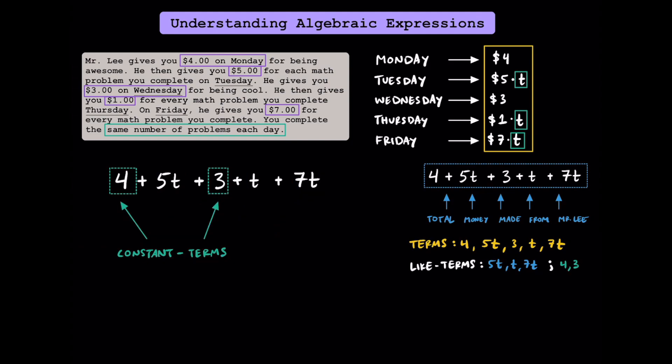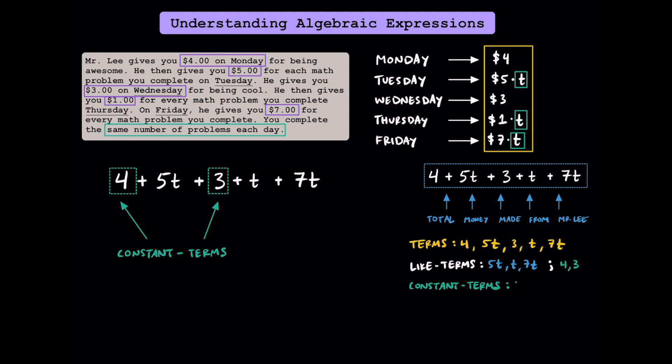Whenever you see a term that's just a number, we actually call this a constant term. We call these constant terms because the value of these terms can never change. We don't call 5t, t, and 7t constant terms because we don't know the value of these terms — depending on what the value of t is, the value of these terms will change. We can call these variable terms. The constant terms here are 4 and 3.